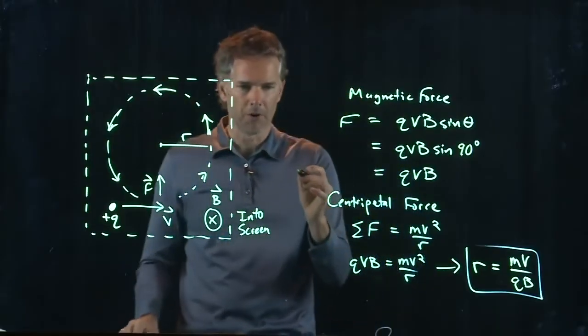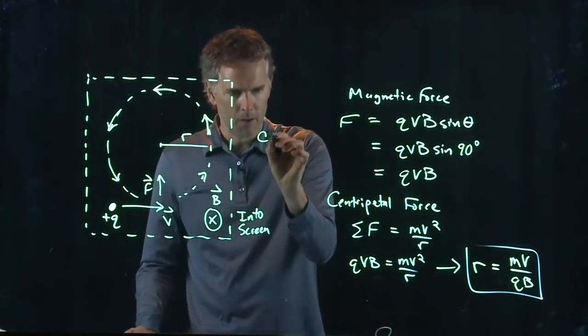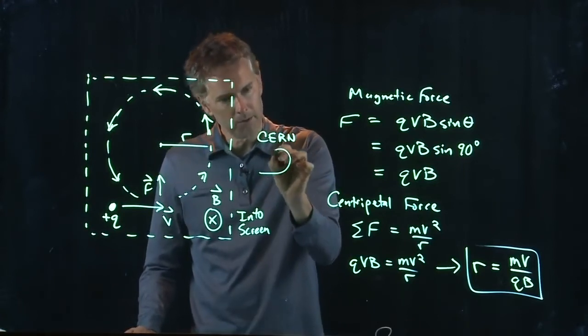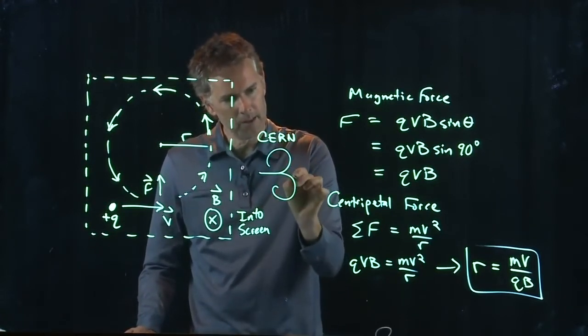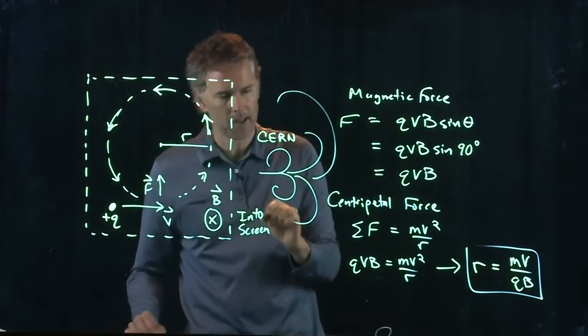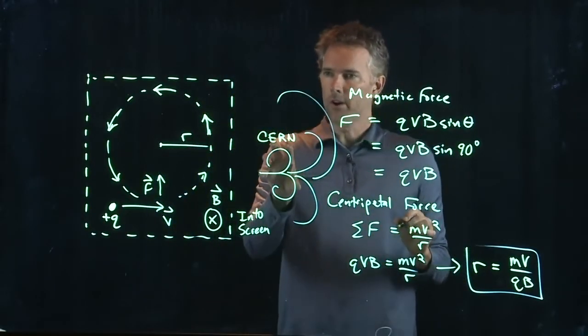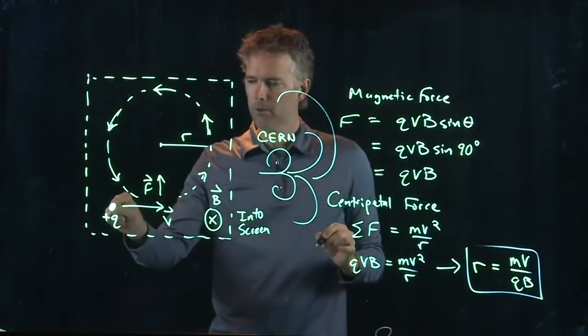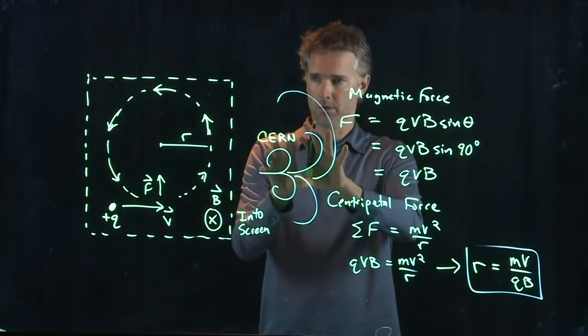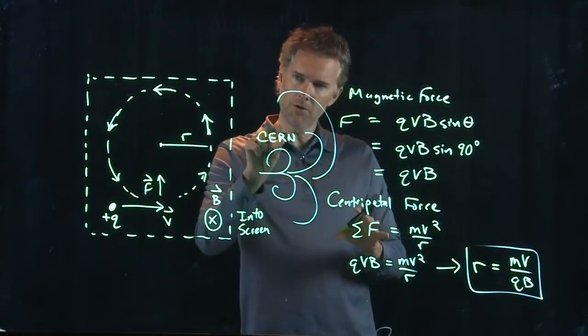And so, when you see those pictures from CERN and places like that, where they have particles coming in and then doing this sort of stuff, and this sort of stuff, and all these circles and beautiful pictures like that, what those are, are charged particles moving through magnetic fields. And from those pictures, all they have to do is measure the radius.